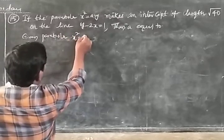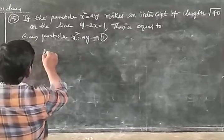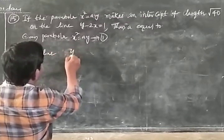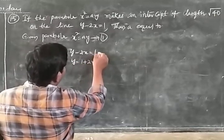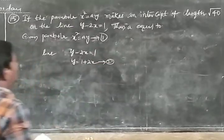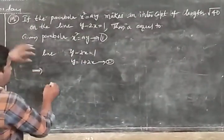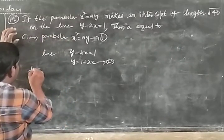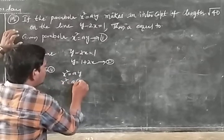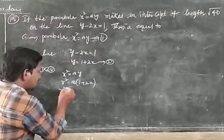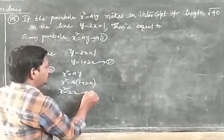Given parabola: x² = ay — this is Equation 1. The line y − 2x = 1, so y = 1 + 2x — this is Equation 2. Substituting y into Equation 1: x² = a(1 + 2x), giving x² − 2ax − a = 0.